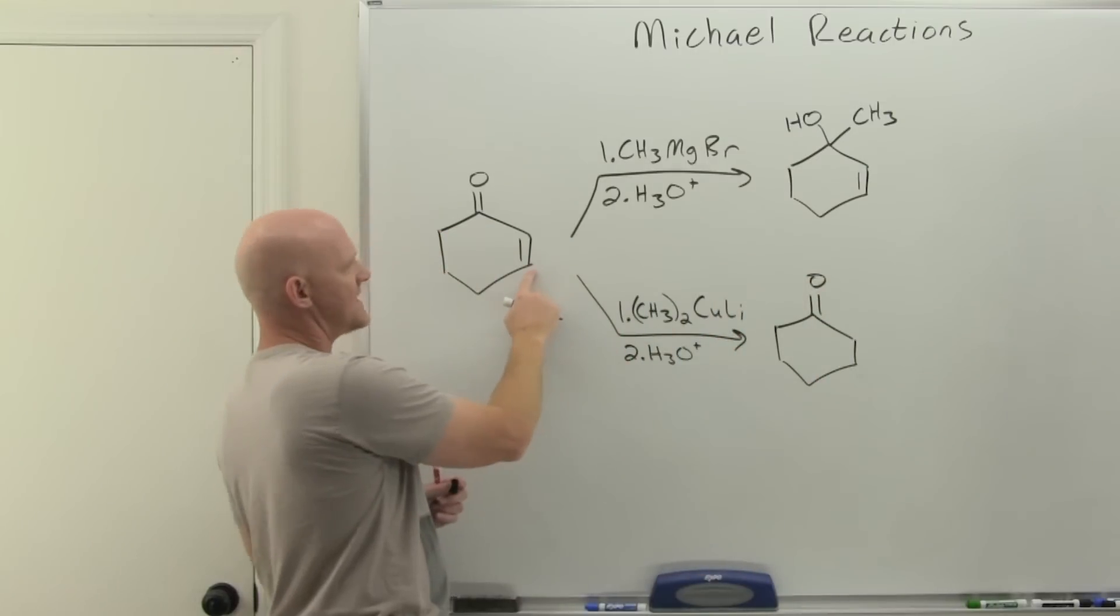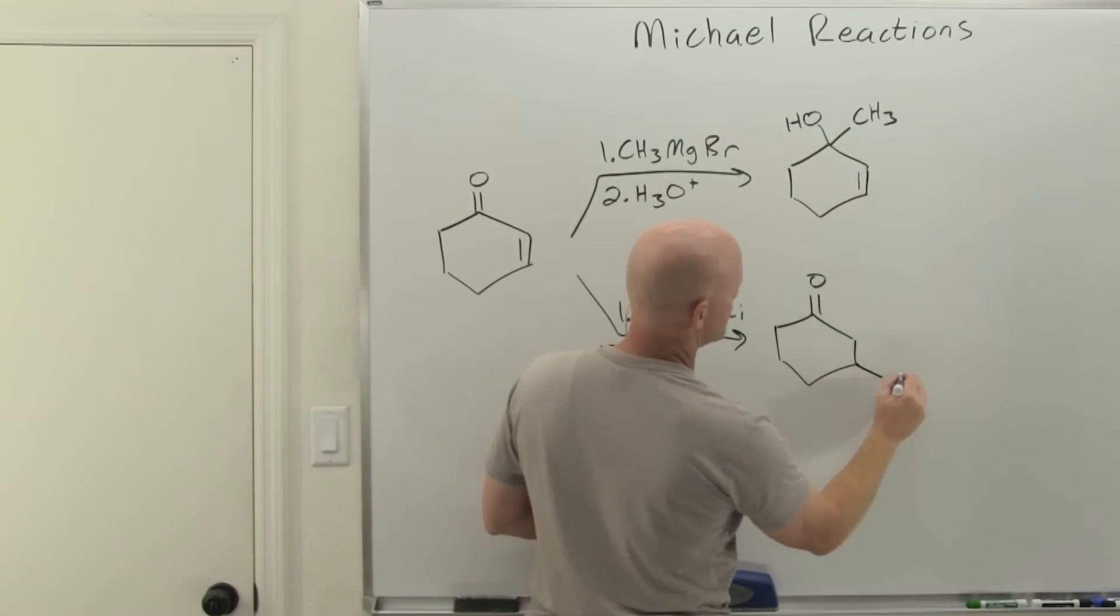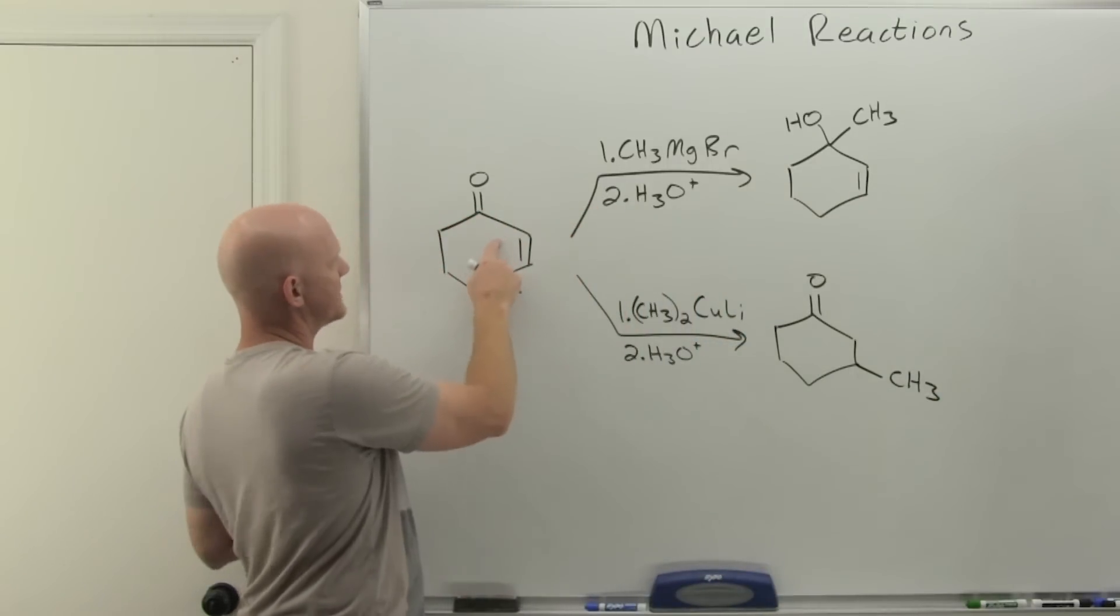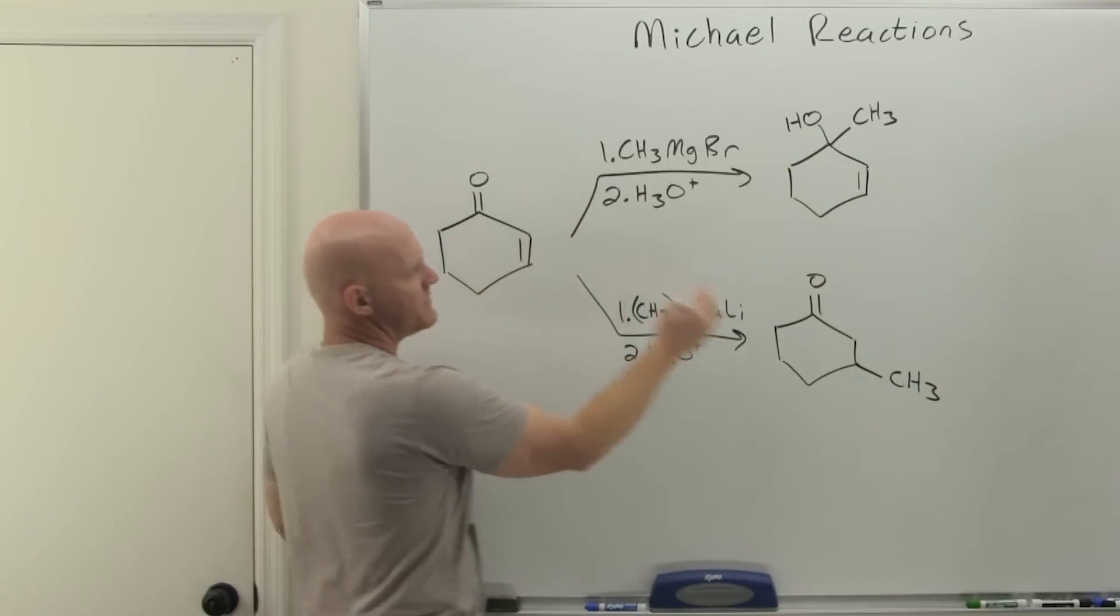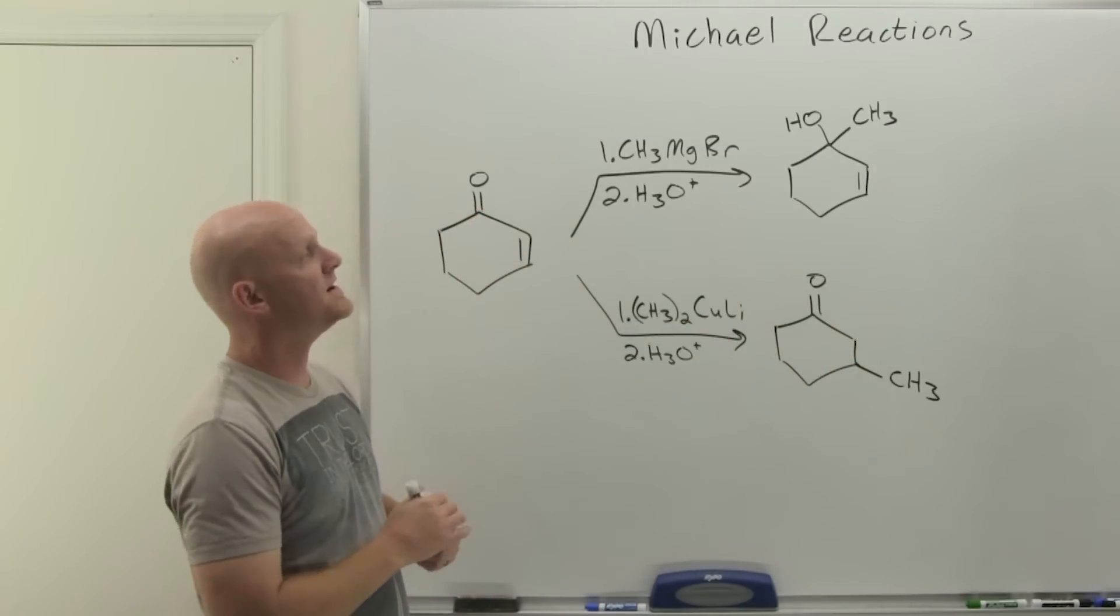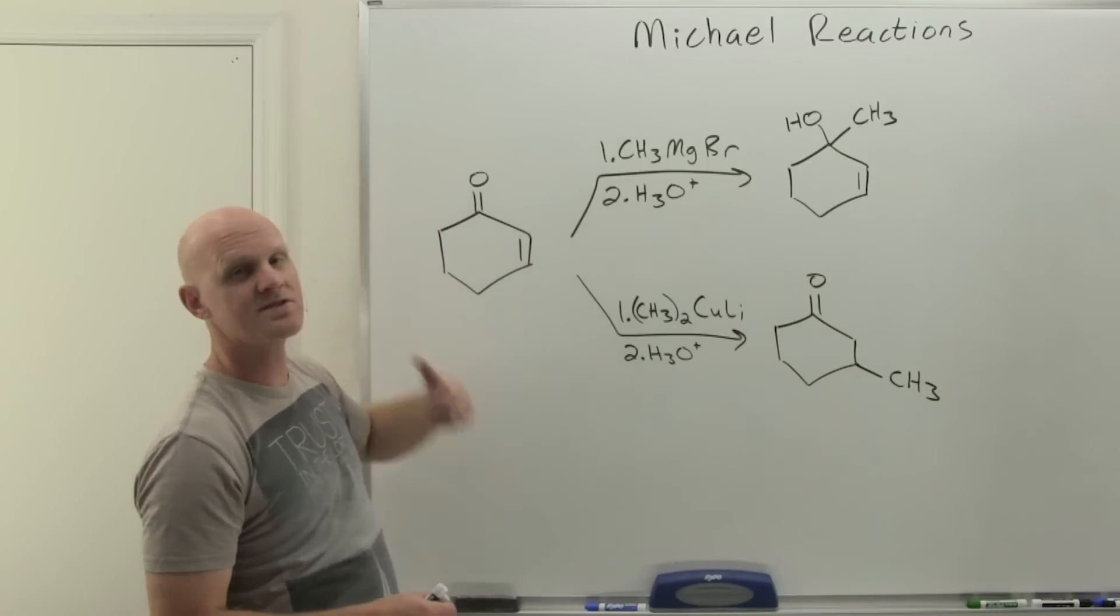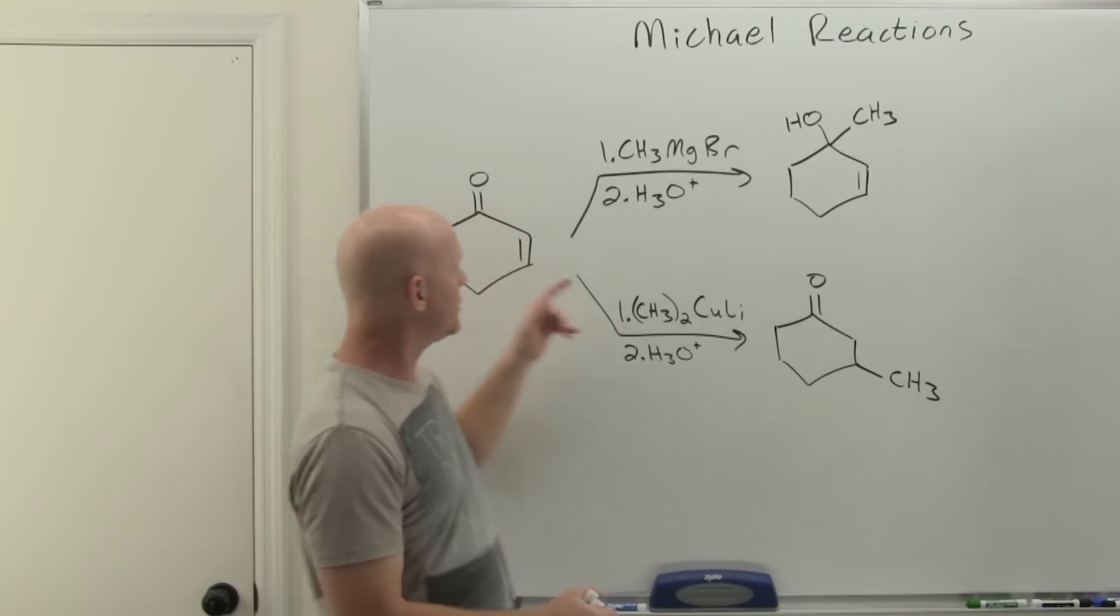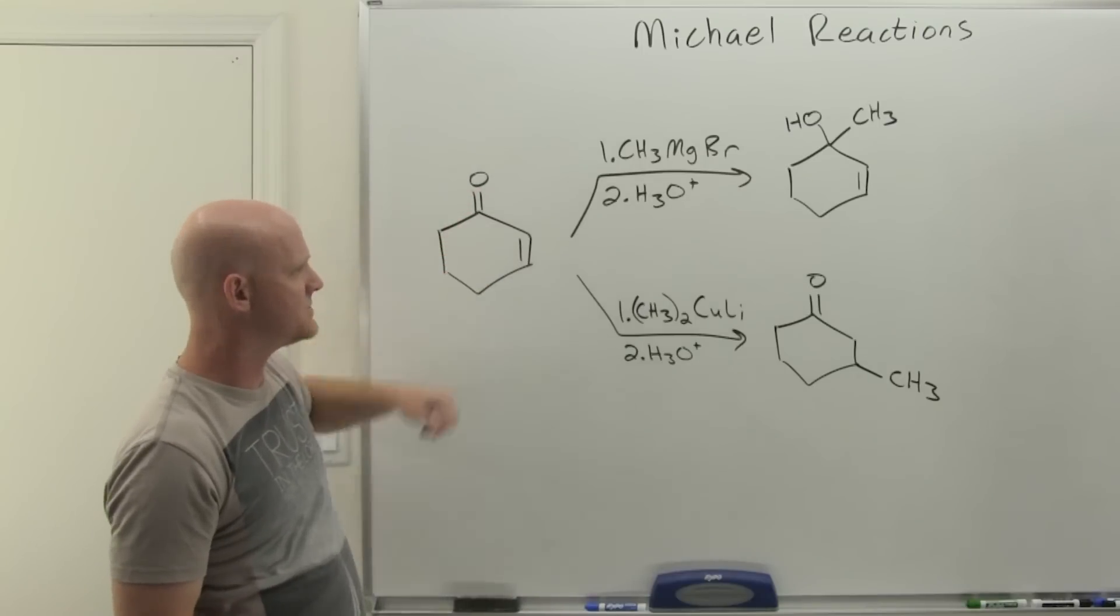However, the difference here with your organocuprate is that now we're going to attack that beta carbon and attach the methyl group there. I like to think of just kicking these electrons over to the carbon next door and then it gets protonated, leading you here, so that you actually still have a ketone. You've done addition across the alkene instead of addition across the carbonyl effectively.